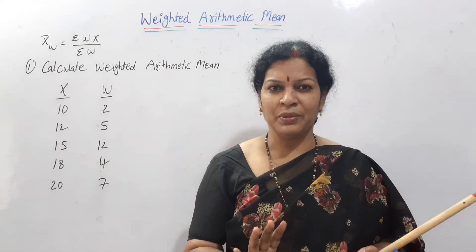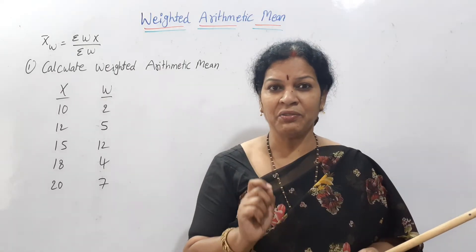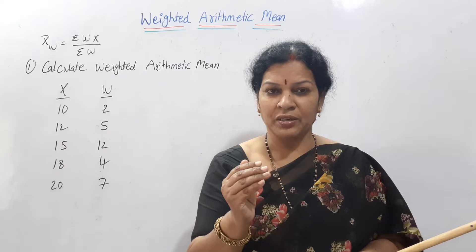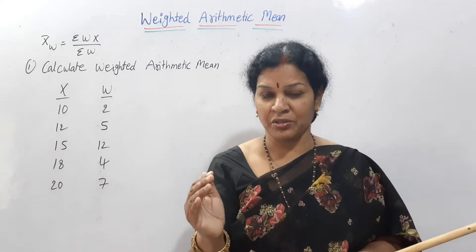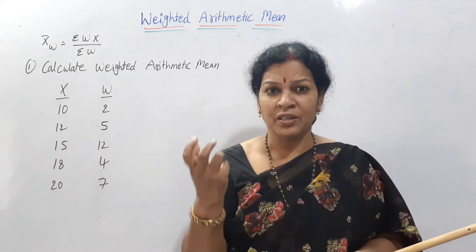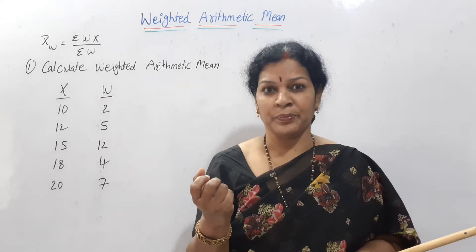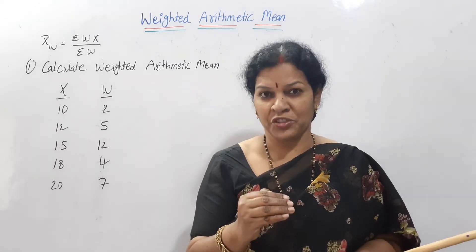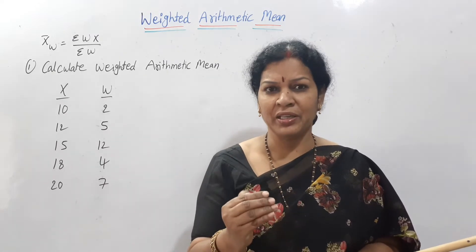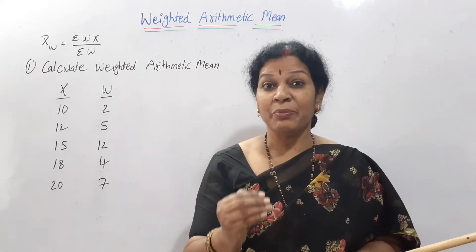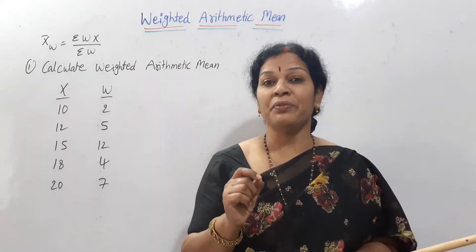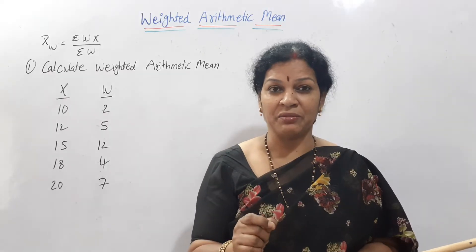Through an example you can understand easily. We are giving weight to the values. Suppose one value is having lots of weight, weight in the sense its importance. Another value is not much up to that level, then we'll give less weight.